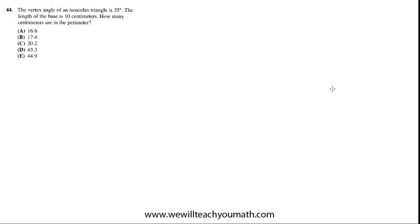44. The vertex angle of an isosceles triangle is 35. The length of the base is 10 centimeters. How many centimeters are in the perimeter? What an awkward way to ask a question, huh? How many centimeters are in the perimeter? They could just say, what is the perimeter? But anyway.